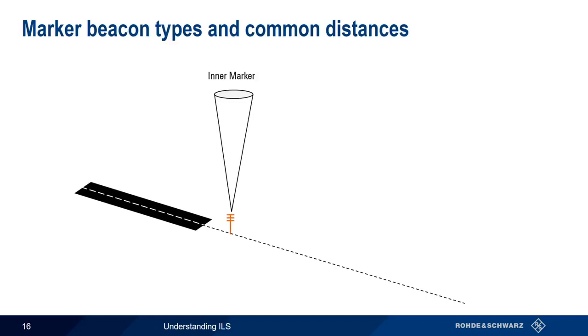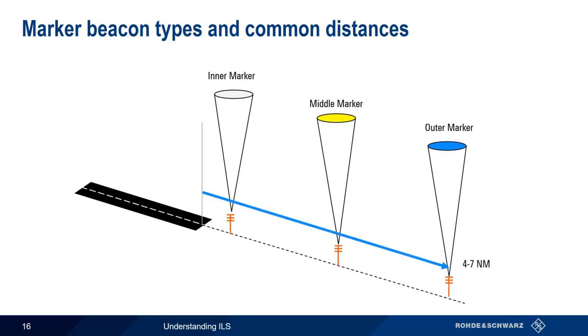These are the inner marker, middle marker, and outer marker. As the names imply, the inner marker is the closest to the runway threshold. The middle marker is the next closest, and the outer marker is the furthest away. There are no firm definitions on exactly how far each of these markers should be from each other, or from the runway threshold. Usually the outer marker is 4-7 nautical miles from the threshold. The middle marker is about half a nautical mile from the threshold. And the inner marker can be anywhere from 200-1500 feet from the threshold. Again, these are rough numbers, and actual distances vary between airports and runways.